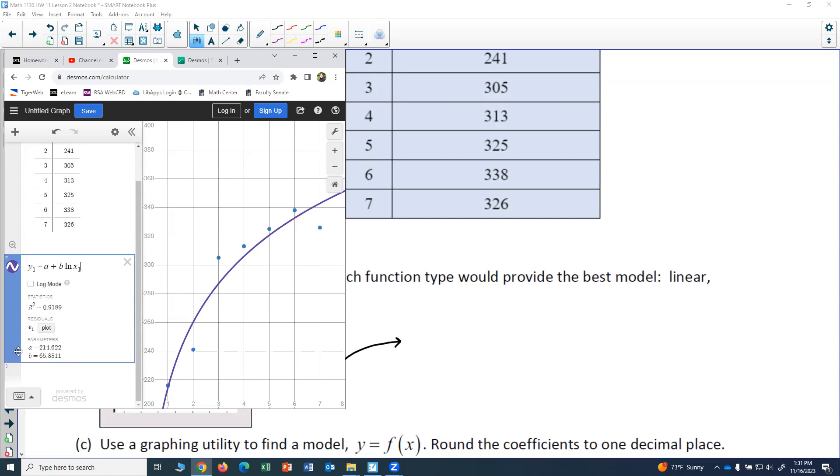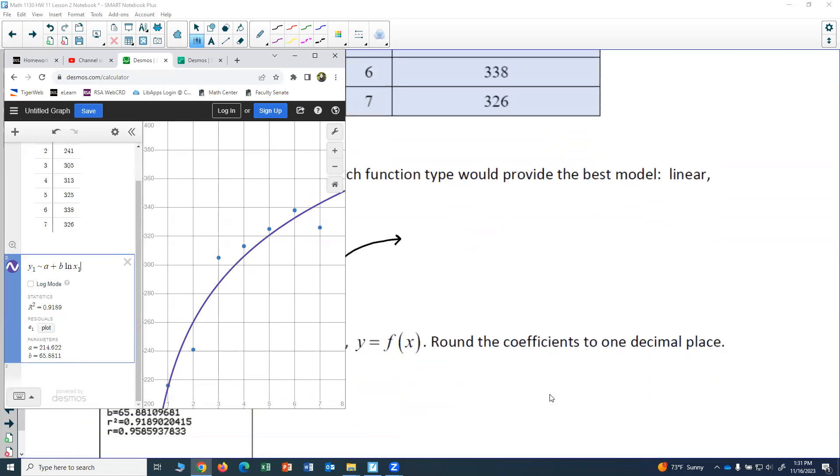All right, so we've got our a and our b. Our a is 214.622 and b is 65.8811. And it says round the coefficients to one decimal place.